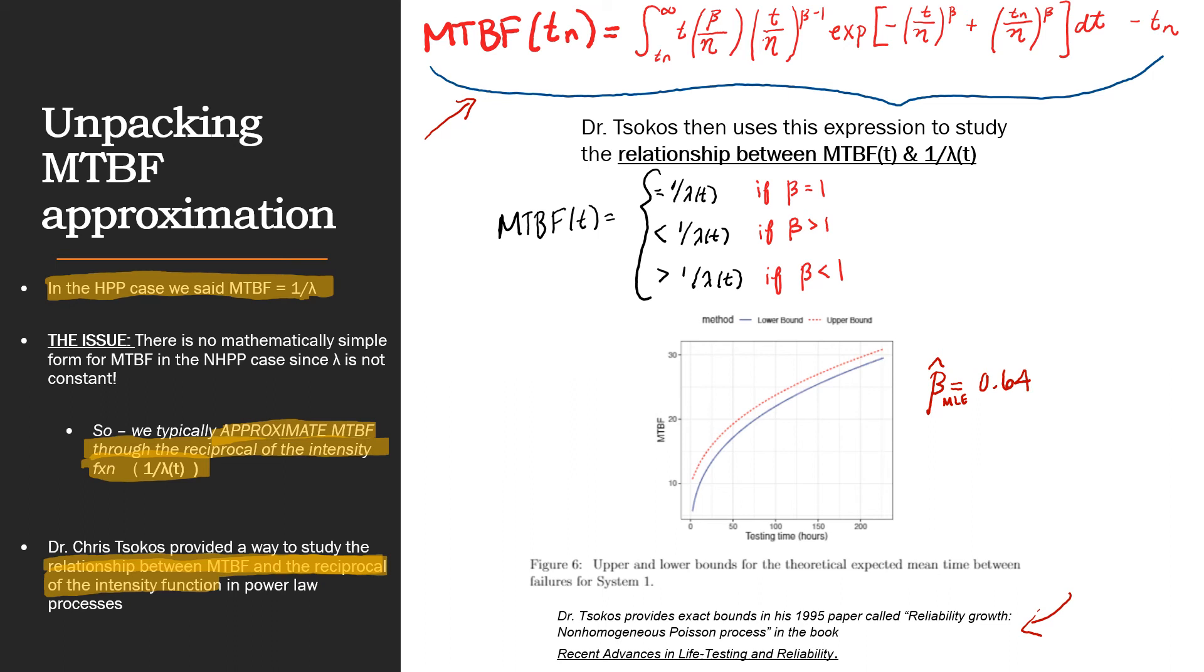So, based off of this β estimate, we're living in this third case here, because 0.64 is less than 1. So, in this case, we have that the MTBF is greater than the approximated MTBF. So, using the bounds that Tsokos derives, we can create this graph. And in this graph, we have MTBF on the y-axis and our test time on the x-axis. And in this particular graph, he's graphing the lower bound and the upper bound for MTBF.